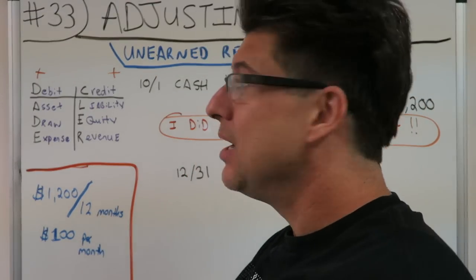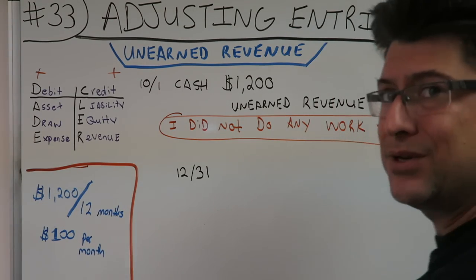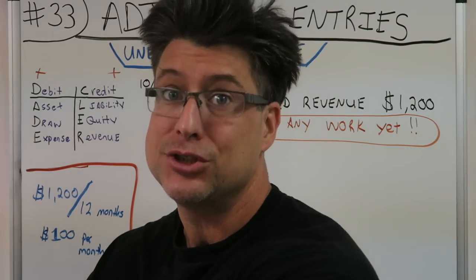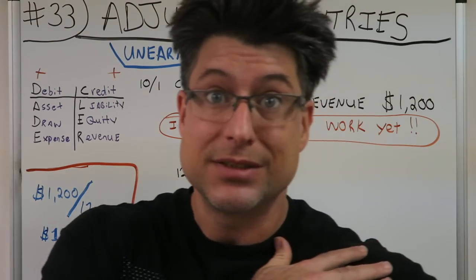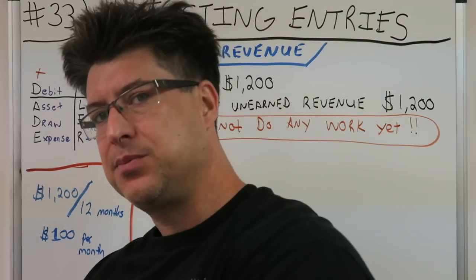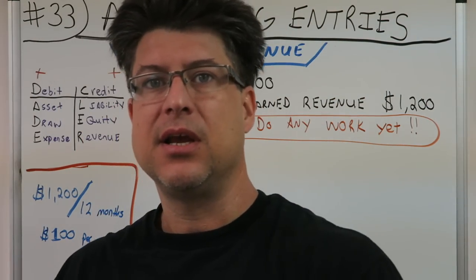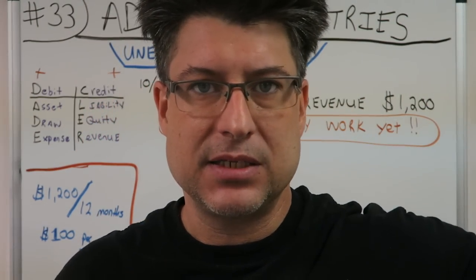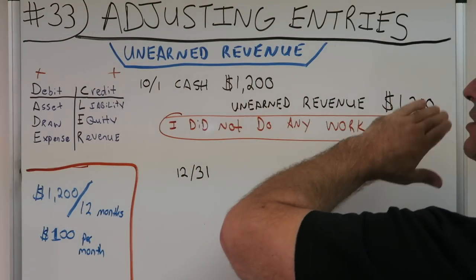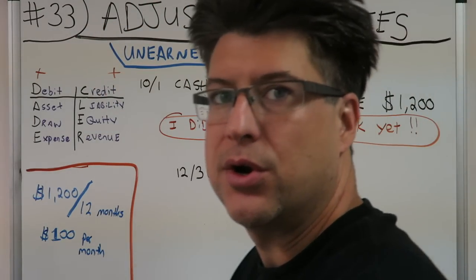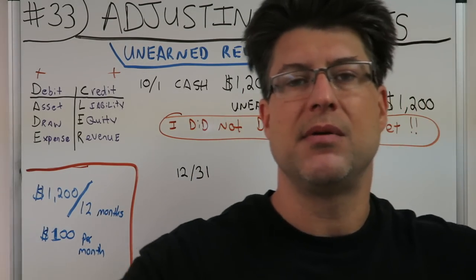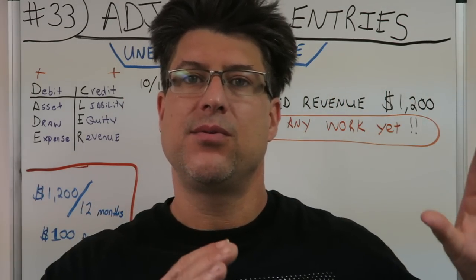Today we're doing adjusting entries. Our first adjusting entry was depreciation, then prepaid expenses. Today, number 33, we're going to do unearned revenue.